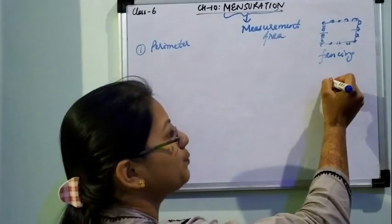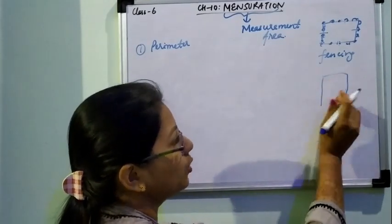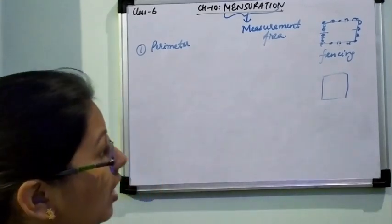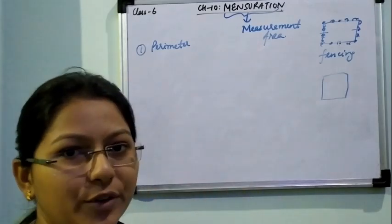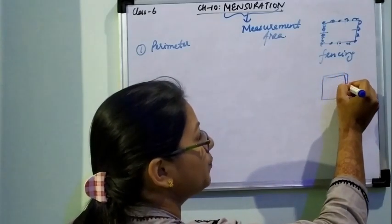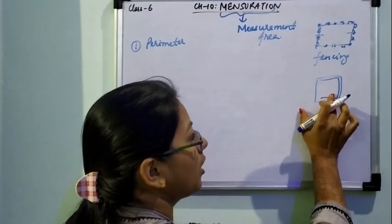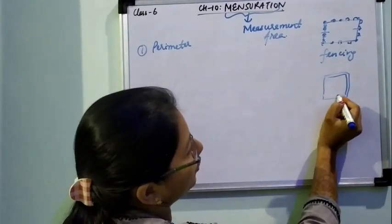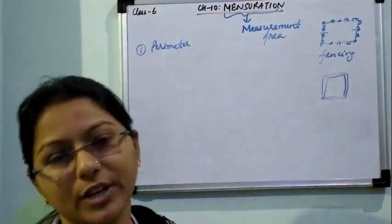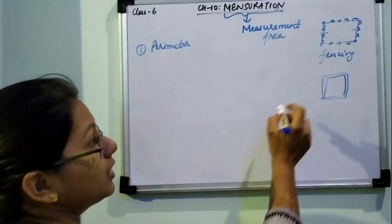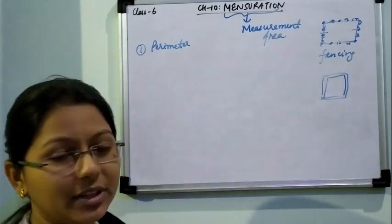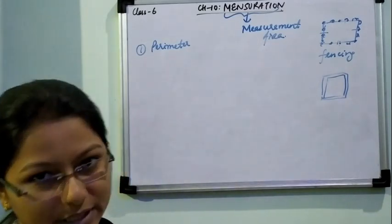Another example: suppose your art teacher has given a task to make a photo frame. Now you want to decorate this photo frame with some ribbon. You want to place the ribbon along the boundary of this photo frame. So in both conditions, we need to move along the boundary. Whenever we are covering the boundary of any figure, we say that we are finding the perimeter of that figure.